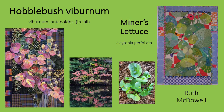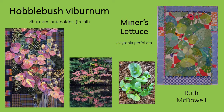I mentioned earlier that a Ruth McDowell quilt had introduced me to Canada Lilies. I also first saw Hobblebush Viburnum and Miner's Lettuce in her quilts. Her Viburnum quilt makes me want to find the plant for my fall garden — she has expertly captured the variegated colors in this plant's fall leaves by piecing together different fabrics and using plaids. Miner's Lettuce is called that because this semi-succulent plant, native to California, was eaten by miners during the gold rush to prevent scurvy. The stem actually passes through the leaf and a tiny white or pink flower grows on top of the leaves. McDowell has stitched small buttons to the center of the leaves to suggest the flowers.